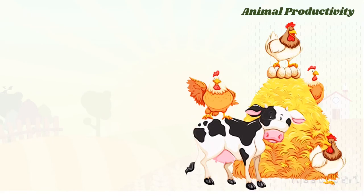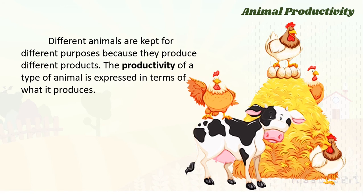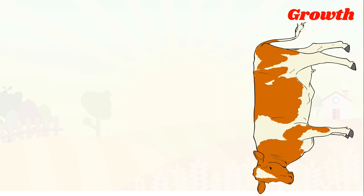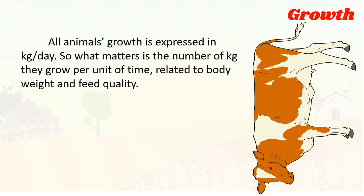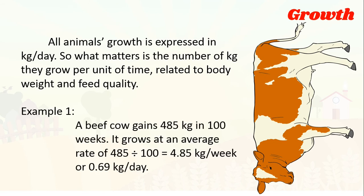Animal productivity: different kinds of animals are kept for different purposes because they produce different products. The productivity of a type of animal is expressed in terms of what it produces. For growth, all animals' growth is expressed in kilograms per day. For example, a beef cow gains 485 kilograms in 100 weeks, so it grows at an average rate of 485 divided by 100, which equals 4.85 kilograms per week, or 0.69 kilograms per day.